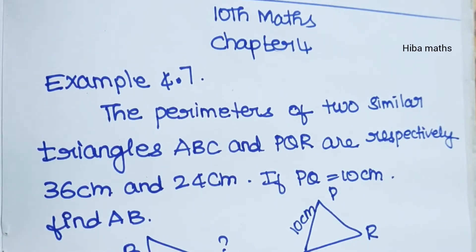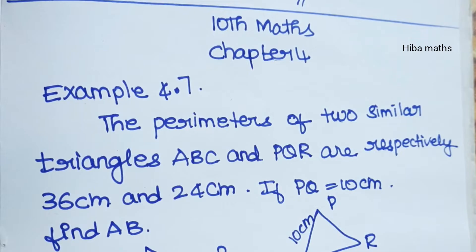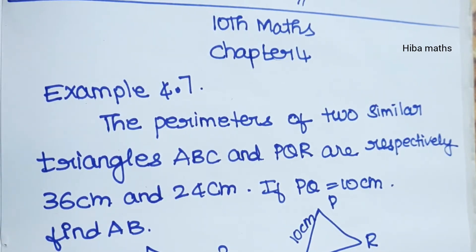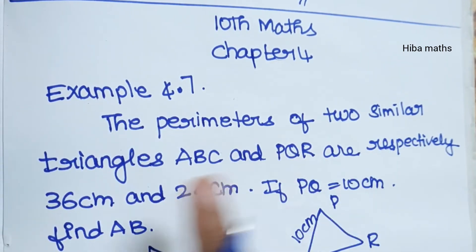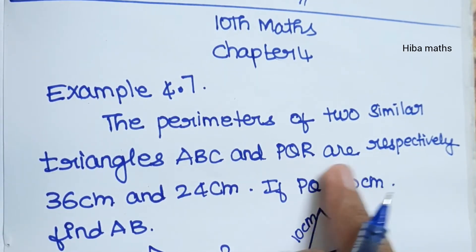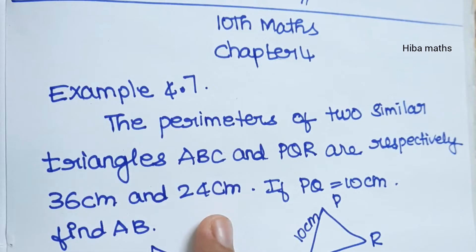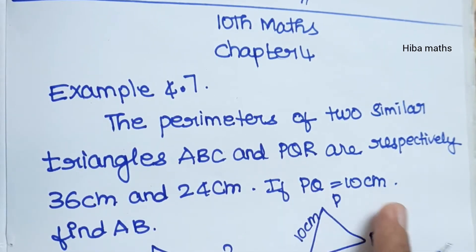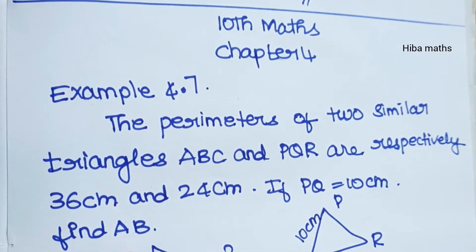Hello students, welcome to Hiba Maths 10th Standard Maths Chapter 4 Example 4.7. The perimeter of two similar triangles ABC and PQR are respectively 36 cm and 24 cm. If PQ is equal to 10 cm, find AB.